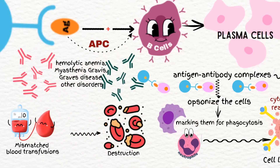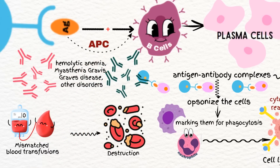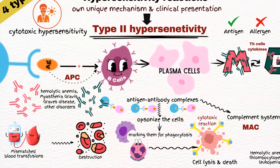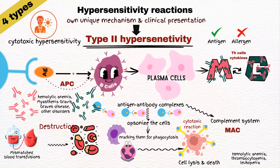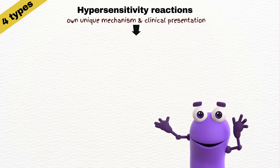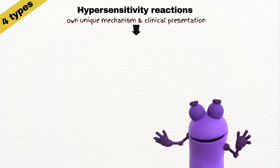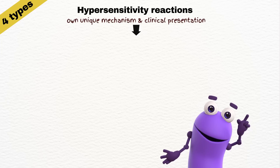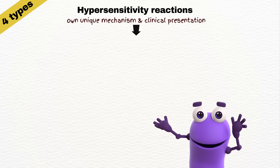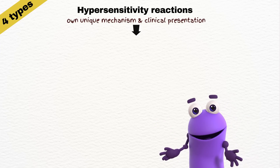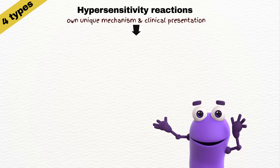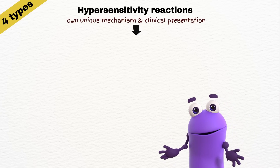Immunoglobulin G and immunoglobulin M antibodies target antigens on the body's own cells or tissues, leading to their destruction. So type 1 hypersensitivity reactions occur in response to soluble allergens and lead to allergic reactions, while type 2 reactions involve antigens typically located on the surface of cells and lead to cell destruction.